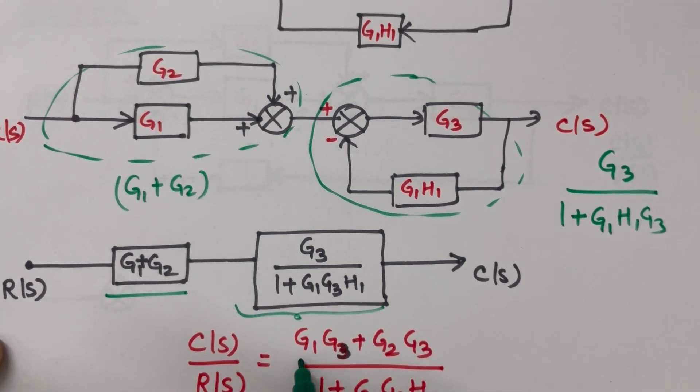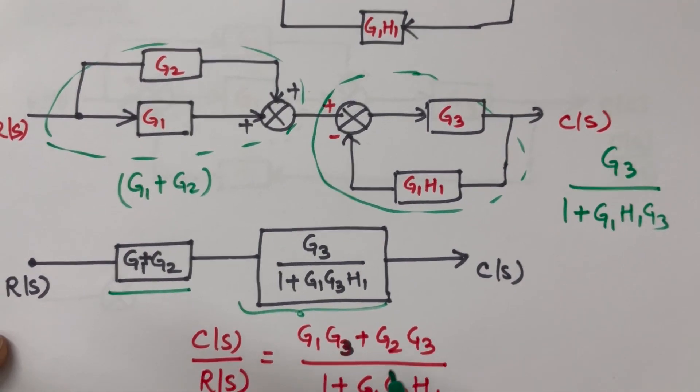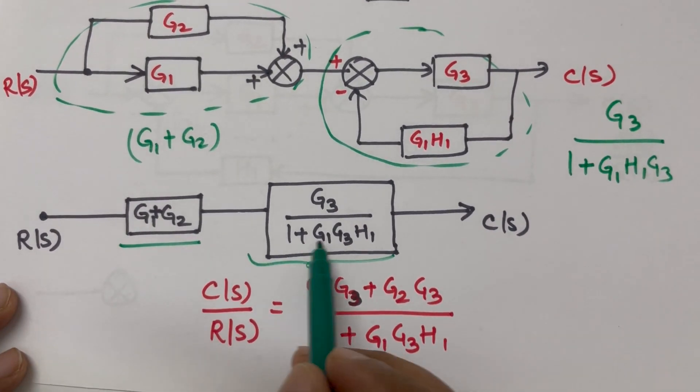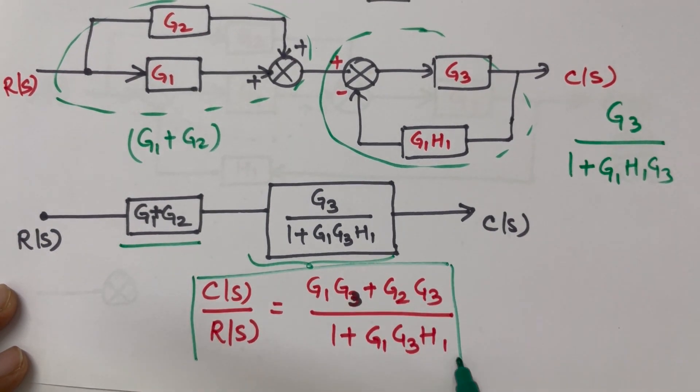G1 into G3 we got this term, G2 into G3 we got this term, and divided by 1 plus G1 G3 H1. So this is our transfer function.